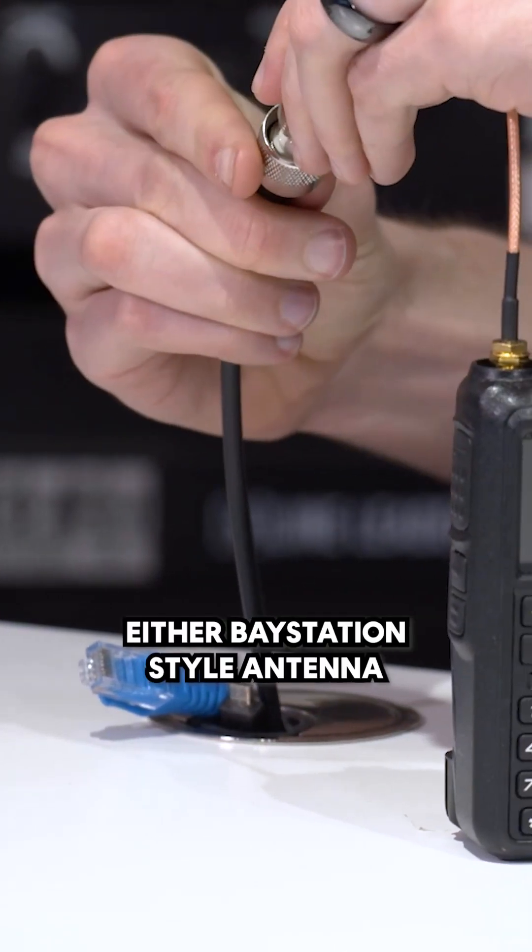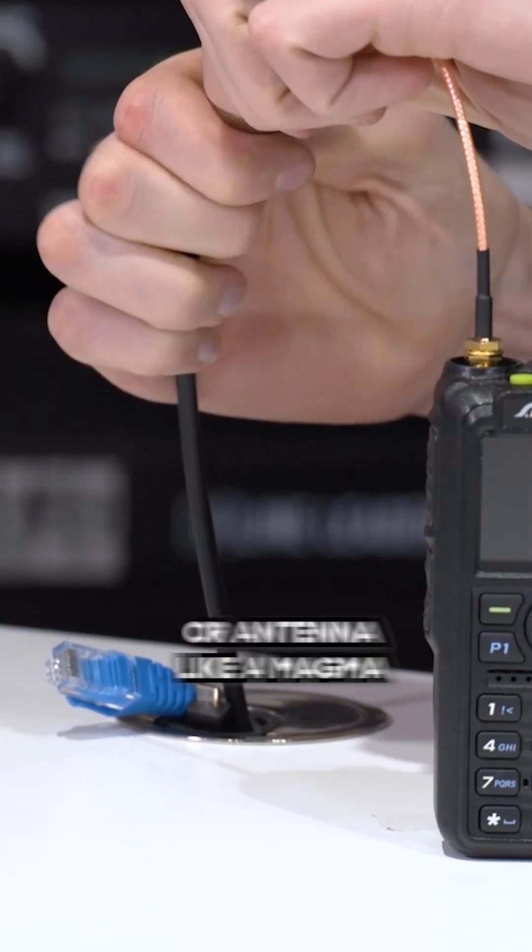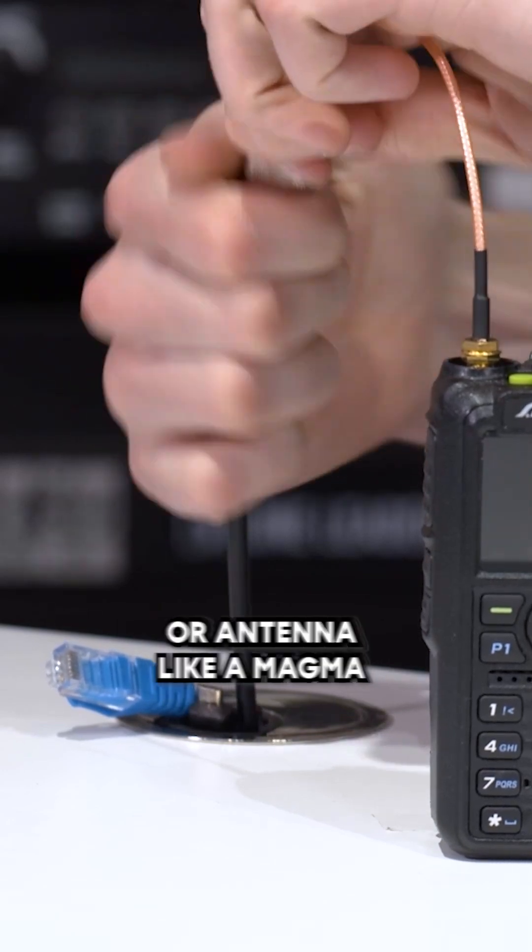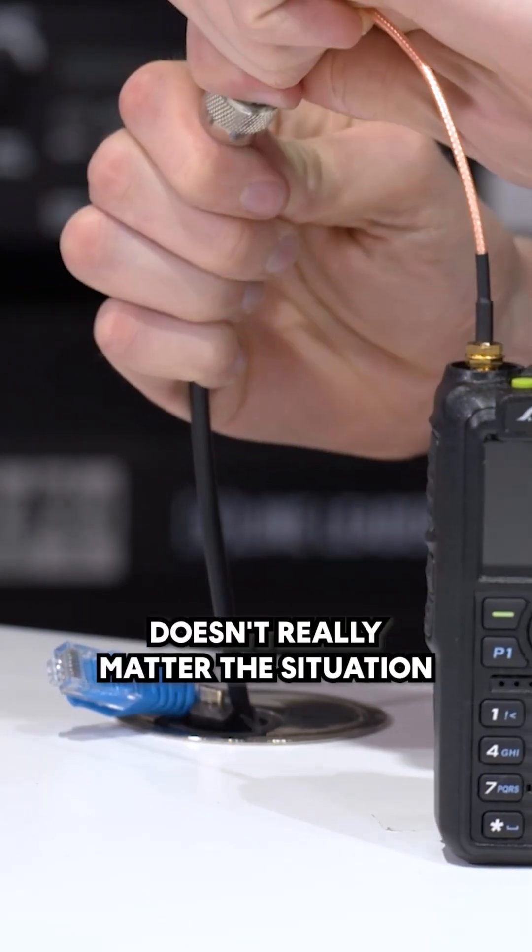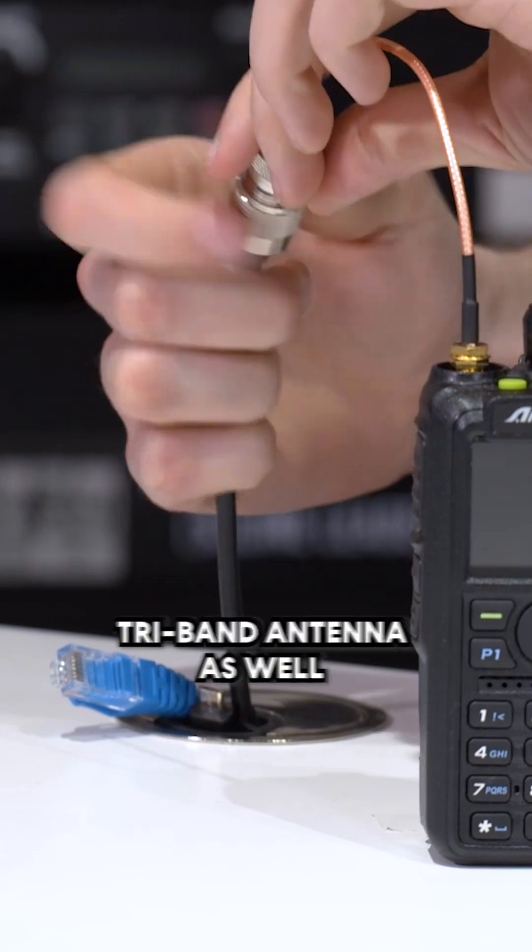So this is a much bigger either base station style antenna or antenna like a mag mount for a vehicle that you already have. It doesn't really matter the situation. It works great with the tri-band antenna as well that we offer.